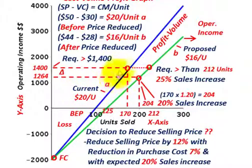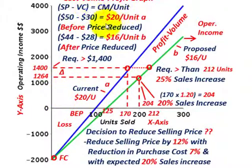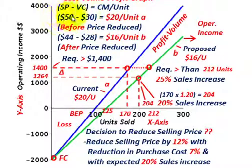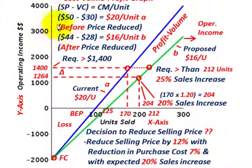We have to look at the contribution margin per unit — that determines the slope of the line, or how much each unit we sell contributes towards our operating income. Before any price reductions, we're looking at a selling price of $50 per unit and a variable cost of $30 per unit. The difference gives us a contribution margin of $20 per unit. So for every unit we sell, we have $20 going towards our operating income.